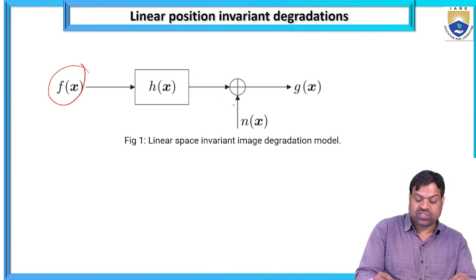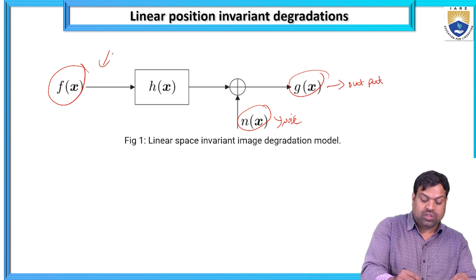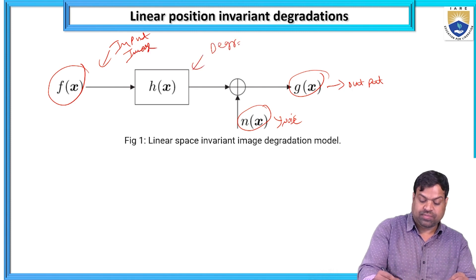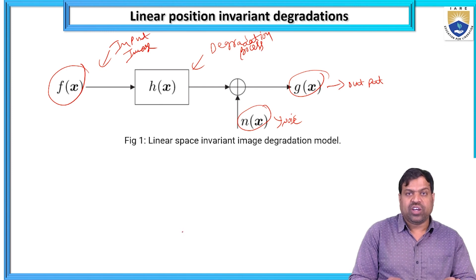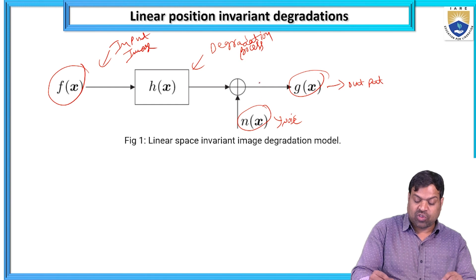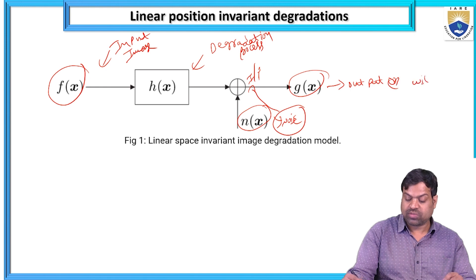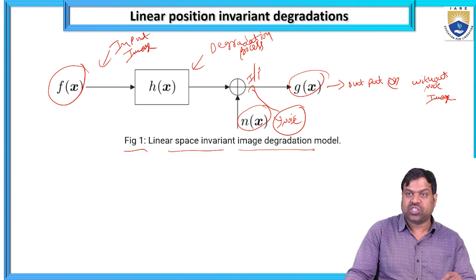The equation is: f(x) = h(x) ⊗ g(x) + n(x), where n(x) is noise, the result is the output, and f(x) is the input image. When the input is f(x) and h(x) is the degradation process and noise is added to the input, the output J(x) is the output without noise. This is the linear space invariant image degradation model.